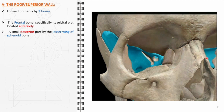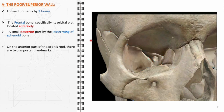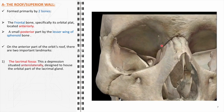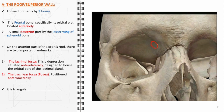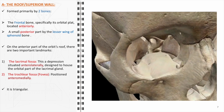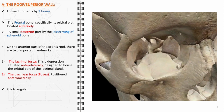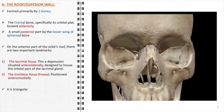Located on the anterior part of the orbit's roof are two anatomically significant landmarks. First, the lacrimal fossa — situated anterolaterally — is specifically designed to house the orbital part of the lacrimal gland, facilitating tear production and distribution. Second, the trochlear fossa, positioned anteromedially, serves an important function in eye movement as it is the point of attachment for the tendon of the superior oblique muscle, responsible for rotating and tilting the eyeball. The superior wall itself has a distinct triangular form.